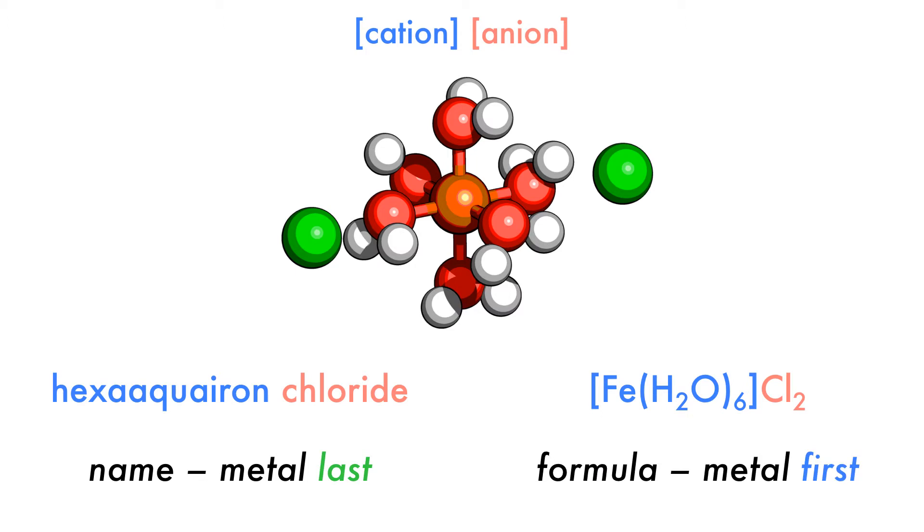To express the oxidation state of the metal, we add roman numerals to the brackets after the ion name.